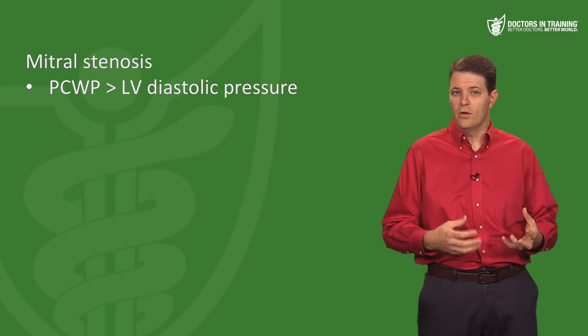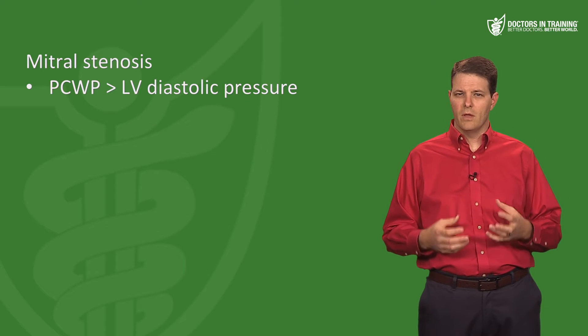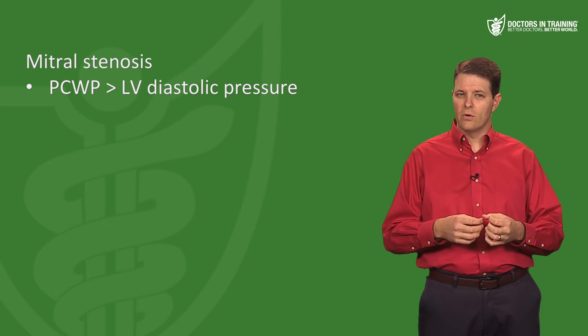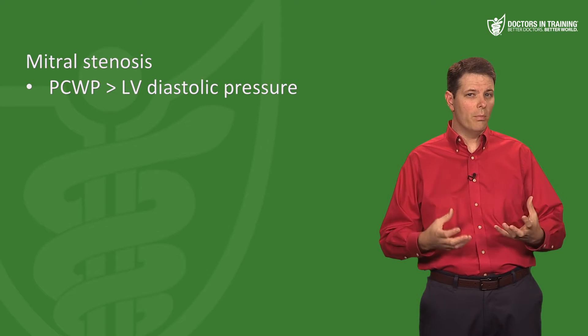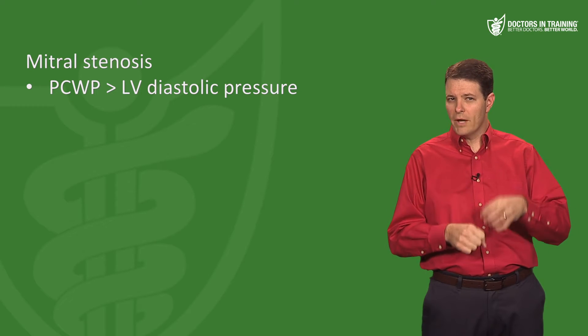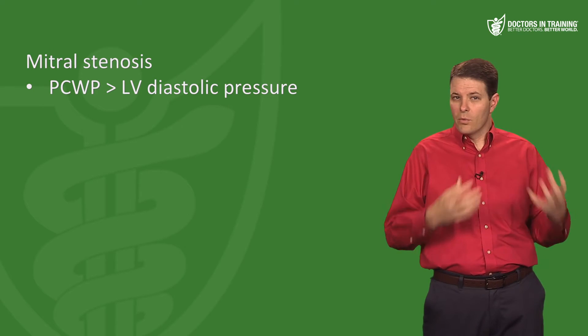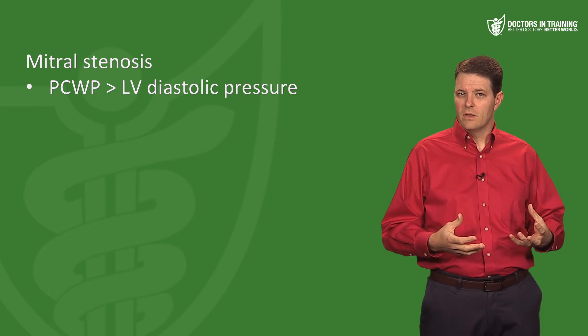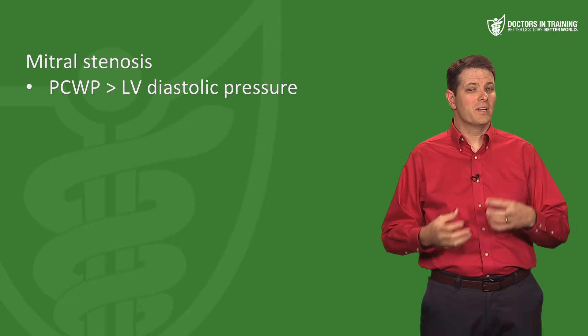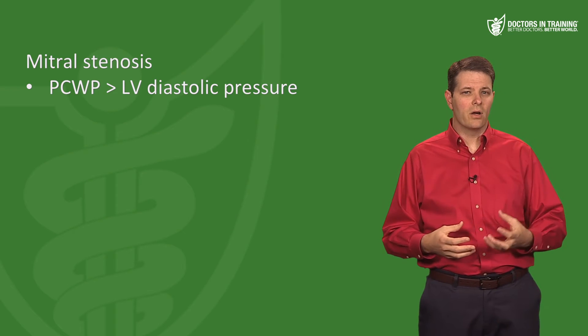In a patient with mitral stenosis, the wedge pressure is higher than the left ventricular diastolic pressure. The mitral valve is narrowed, so during diastole the left atrium contracts against a partially closed mitral valve — the blood has nowhere to go, so pressure rises. Since the wedge pressure approximates the left atrial pressure, the wedge pressure will be higher than the left ventricular diastolic pressure.